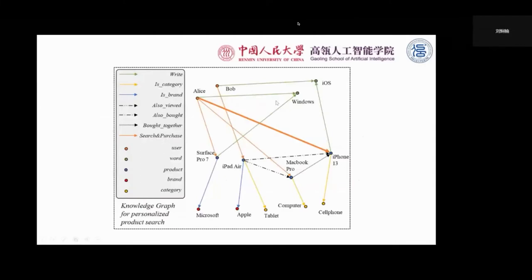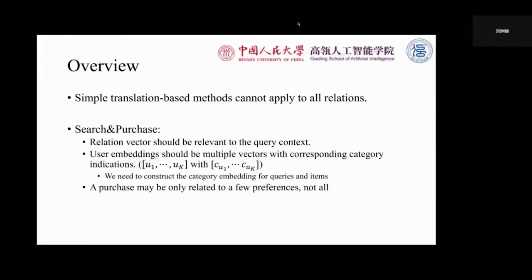Here is the KG we build for the personalized product search situation. However, simple translation-based methods cannot apply to all relations, especially for the search and purchase relation. First, the relational embedding of search and purchase should be relevant to the query context. For example, the embedding of query 'cell phone' is supposed to be different from the embedding of query 'computer'. Second, user embeddings should be multiple vectors with corresponding category indications. To construct the category indications, we also need to construct the category embedding for queries and items. Finally, approaches may only be related to a few preferences, not all. We need to selectively aggregate the multiple interests while providing personalized results for users.